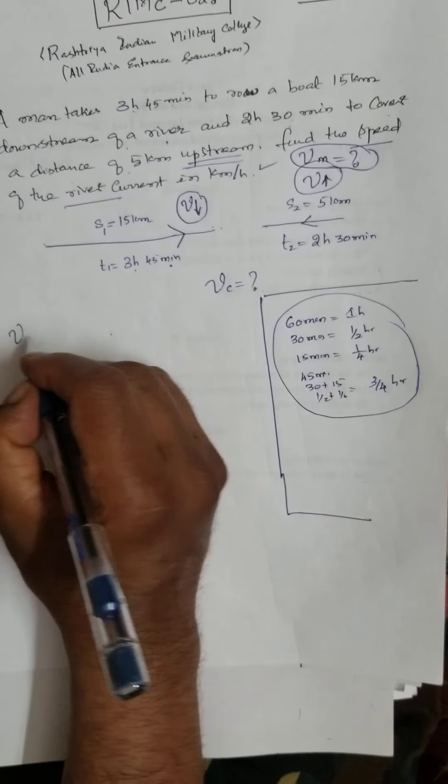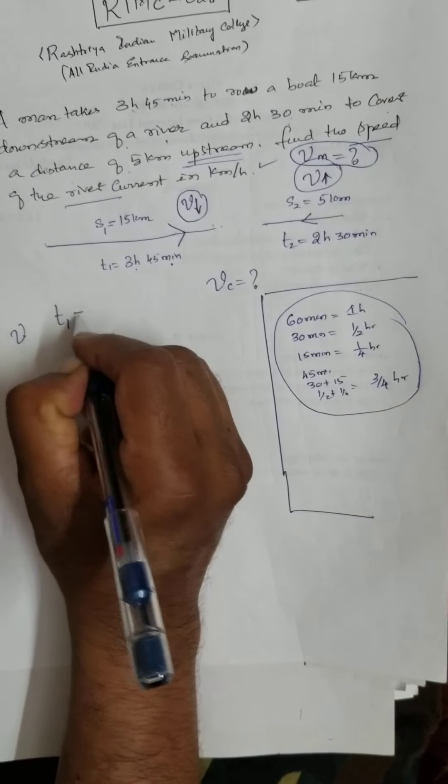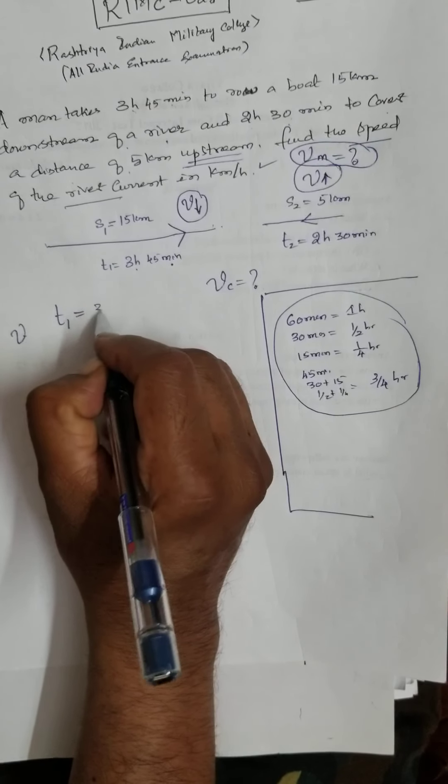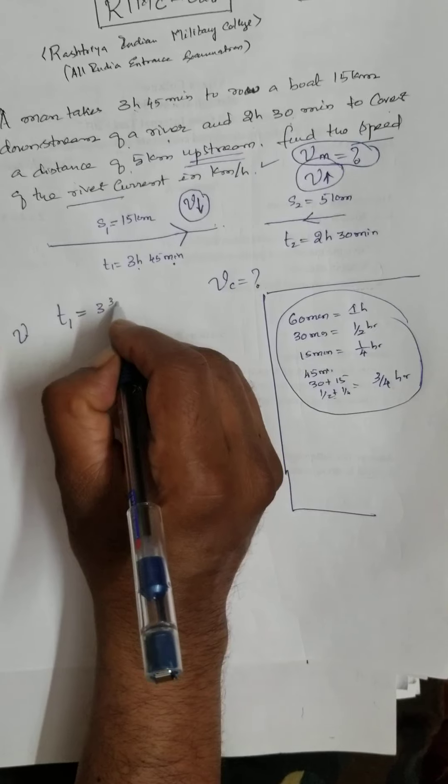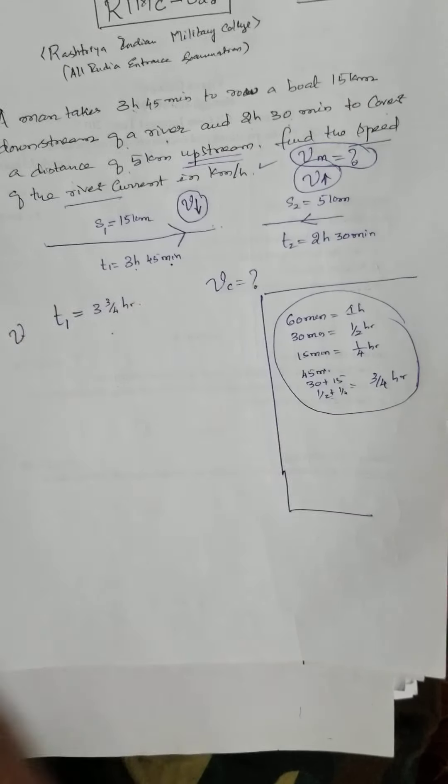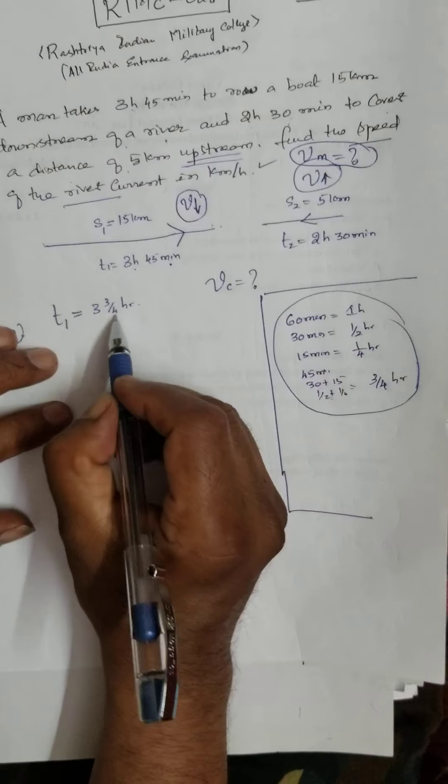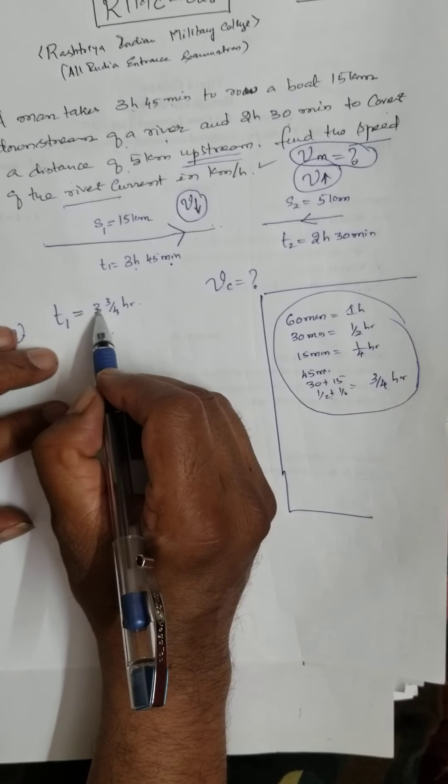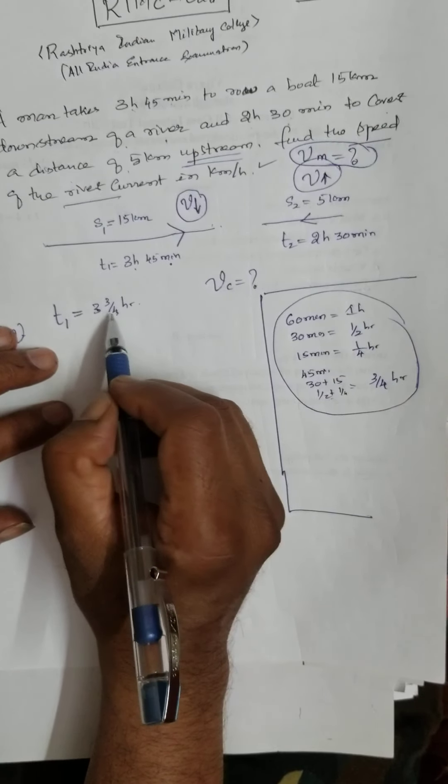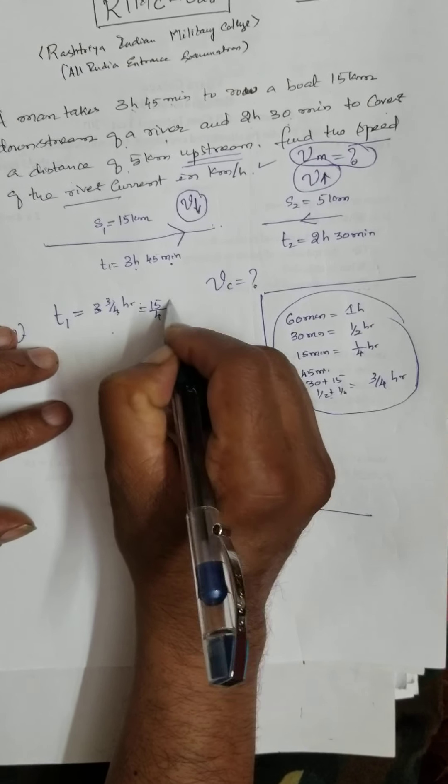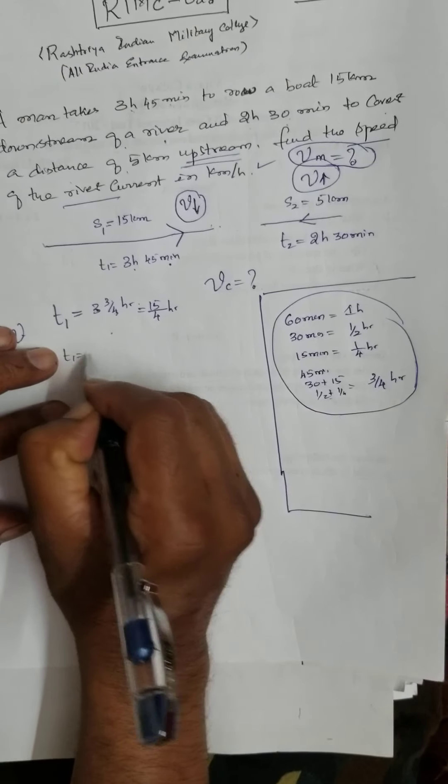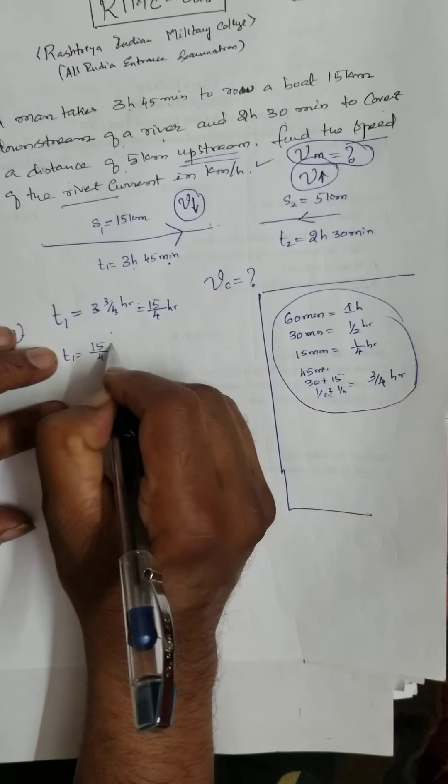Therefore, what is T1 here? T1 is equal to 3, 45 is what? 3 fourth of the hour. Understood? That means, 12 in mixture fraction. Therefore, 12 plus 3, 15, 15 by 4 hour. Therefore, T1 is equal to 15 by 4 hour. You are done. Time I know.